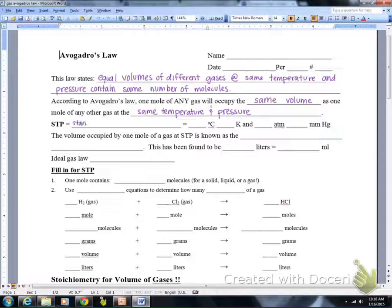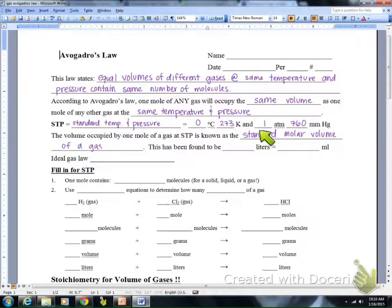Let's remember that STP, which is standard temperature and pressure, is equal to 0 degrees Celsius, 273 Kelvin, 1 atmosphere, or 760 millimeters of mercury.